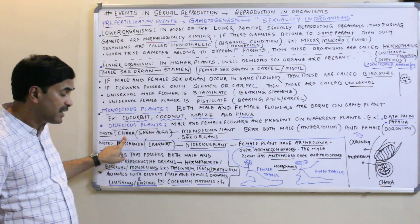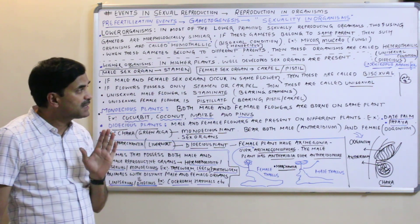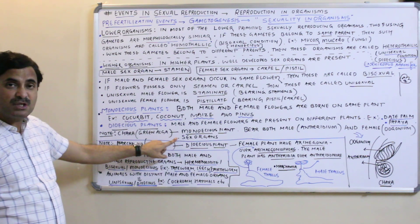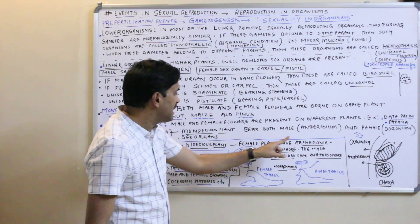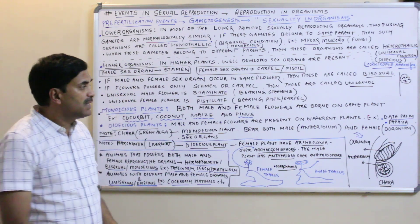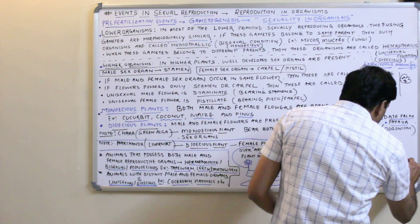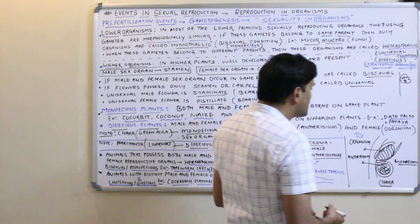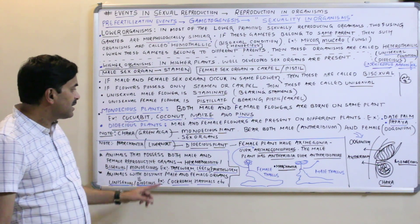Chara is a green alga and a very important example mentioned in NCERT. Chara is a monoecious plant because it bears both male and female sex organs. The male organ is called the antheridium and the female sex organ is called the oogonium. In the diagram of Chara, the antheridium is at the lower portion and the oogonium is at the upper portion.